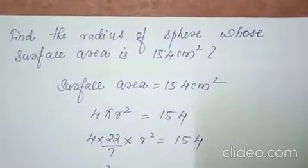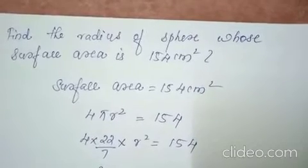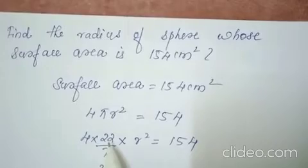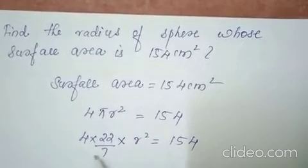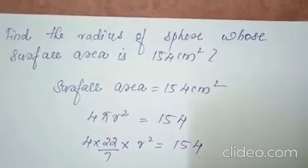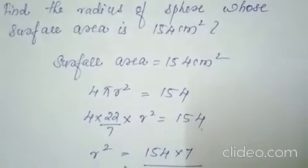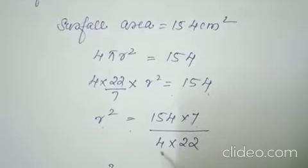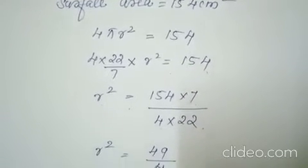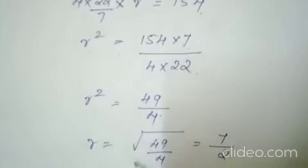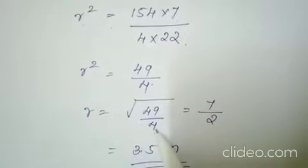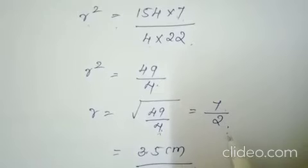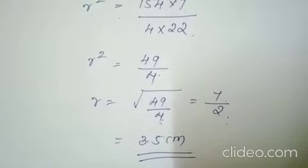The sixth question: find the radius of the sphere whose surface area is 154 cm square. Here they have given the surface area, 154 cm square. Using the formula 4 pi r square equals 154 — 4 into 22 by 7 into r square equals 154. We have to find r. Cross multiply: r square equals 154 into 7 divided by 4 into 22. While simplifying, you get r square equals 49 by 4. So r equals root of 49 by 4. The root of 49 is 7, the root of 4 is 2. So r equals 7 by 2. Dividing 7 by 2, you will get the radius 3.5 cm.